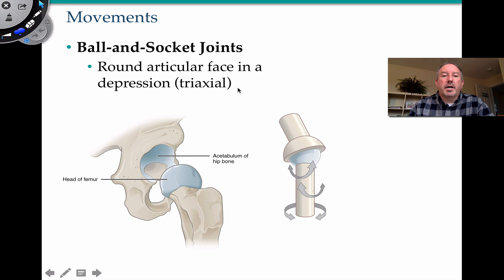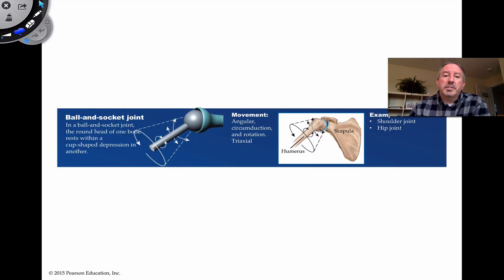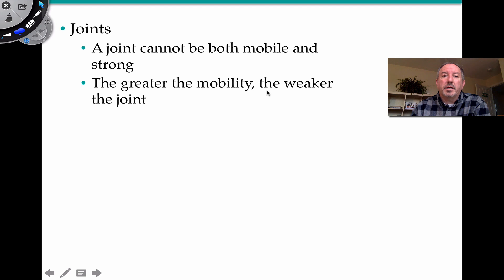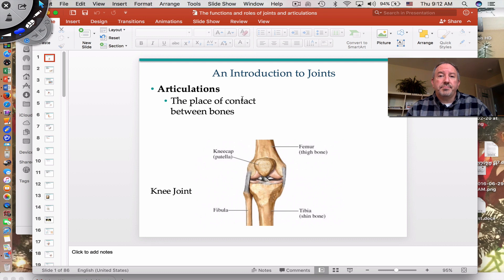Finally, the ball and socket joint. I mentioned this in the acetabulum and the head of the femur. Here we have a lot of motion — a lot of mobility and freedom. The shoulder is also an example, where the humerus articulates with the scapula. Though there's a tremendous amount of motion in the ball and socket joint — seen in both the shoulder and the hip — the greater the mobility, the weaker the joint, and dislocations can occur if you're not careful. Hopefully you enjoyed learning about the different functions and roles of joints and articulations. Thanks for watching.